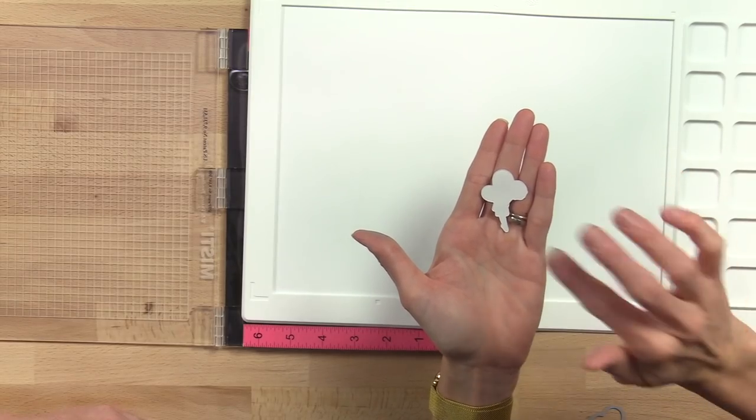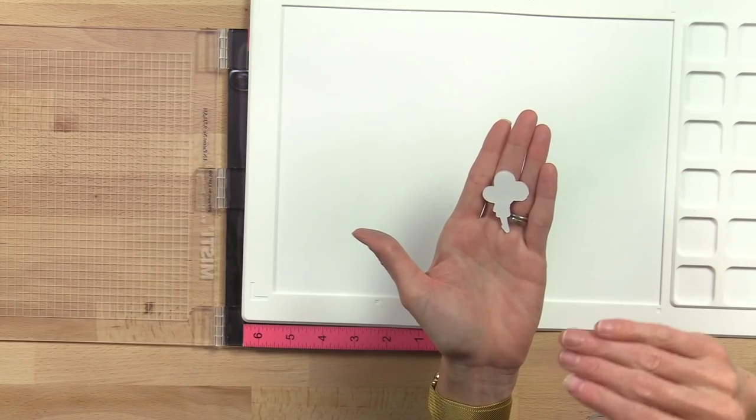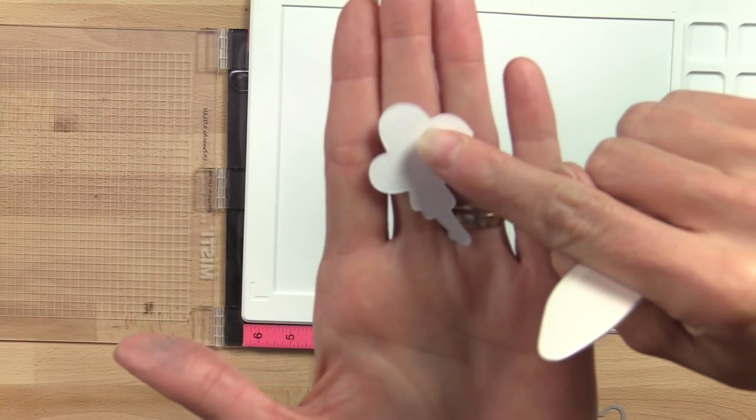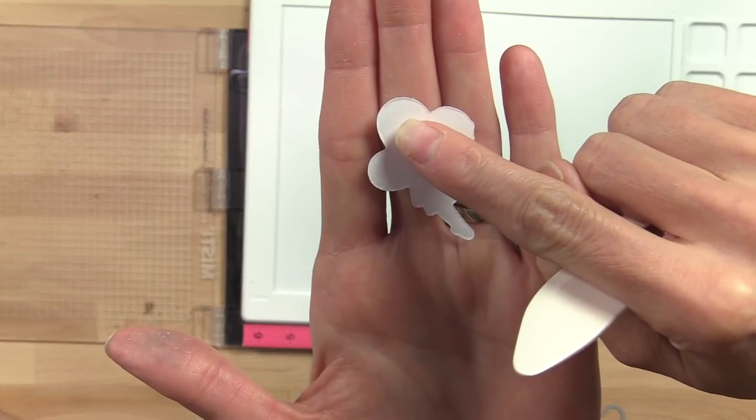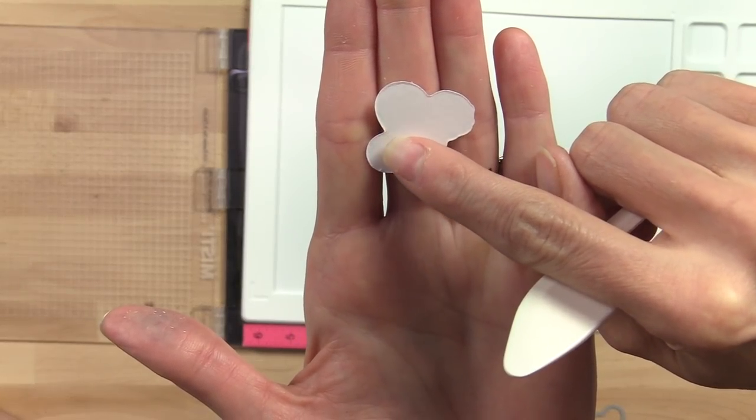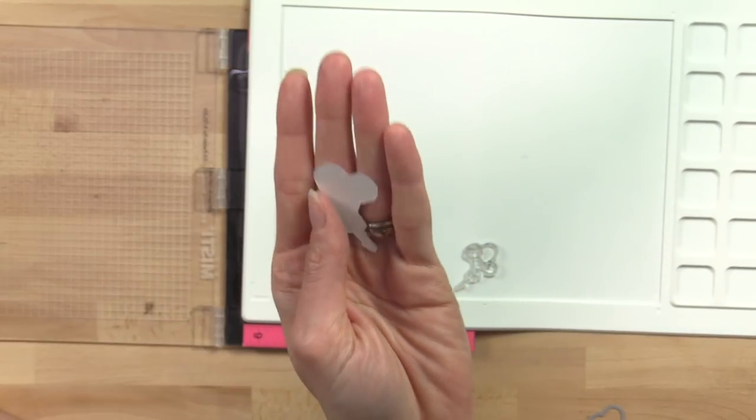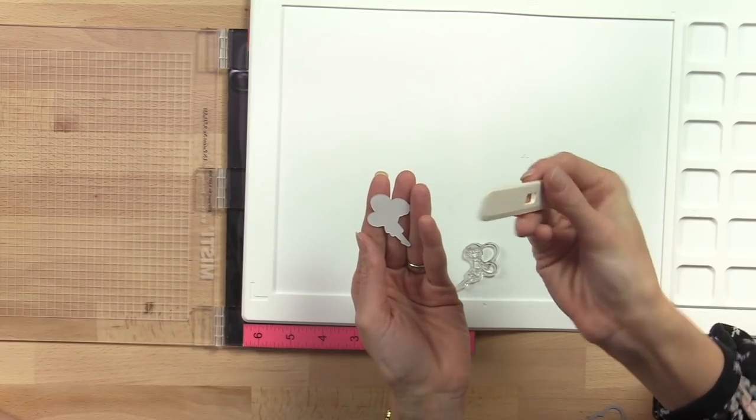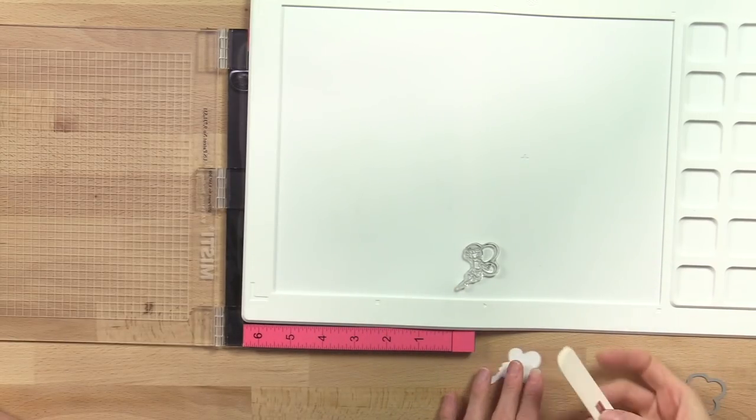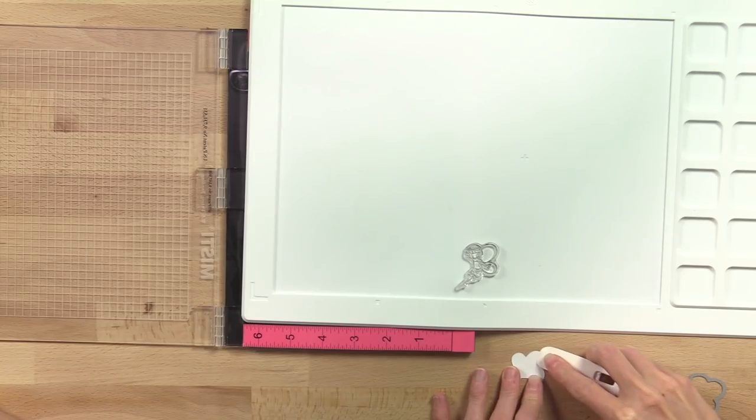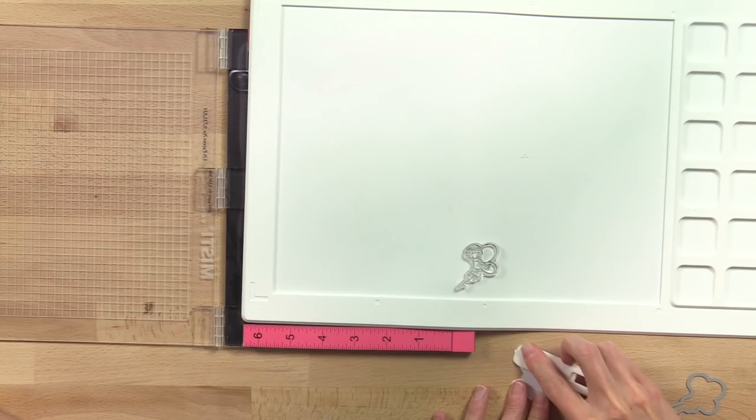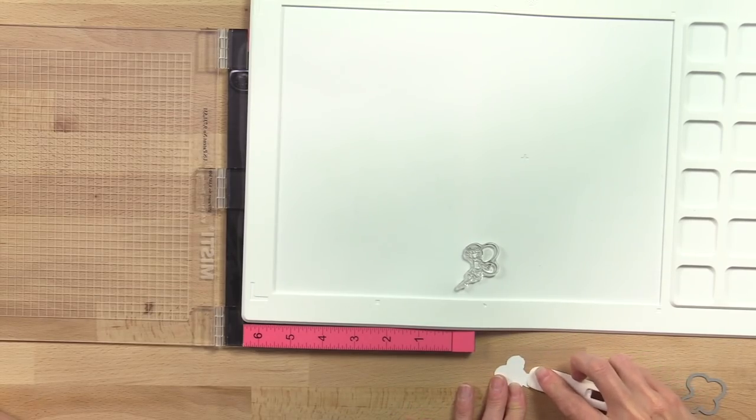Right along the edge here. So we're going to just smooth that out really quick. Just use a scoring tool and a hard surface and just kind of press on that edge and just kind of smooth it out. This will make it completely flat, so when you press on the die cut to transfer the image, it will transfer perfectly.